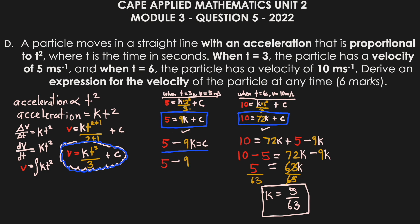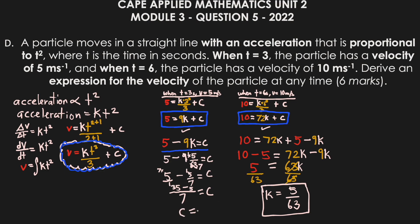To find c, substitute k equals 5/63 back into c equals 5 minus 9k: c equals 5 minus 9 times 5/63. Since 9/63 simplifies to 1/7, we get c equals 5 minus 5/7. Converting 5 to 35/7 gives c equals 30/7. Now substituting back, v equals (5/63)·t³ over 3 plus 30/7.